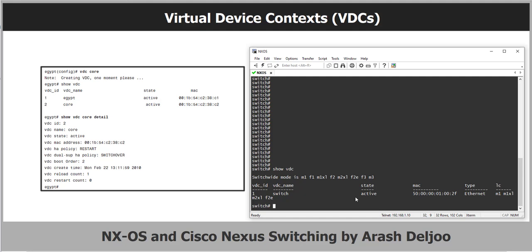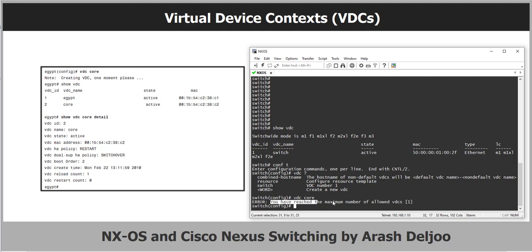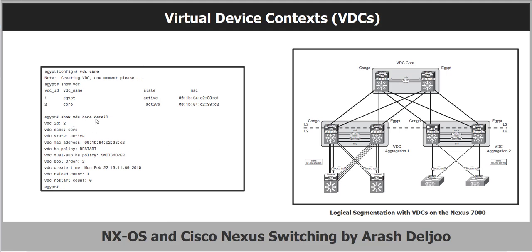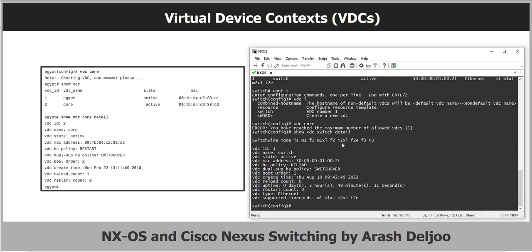If I try to create a new VDC — for example, 'vdc core' — I receive an error message because the emulator has reached the maximum number of allowed VDCs. On an actual Nexus 7000 switch, you have four VDC options: VDC one by default, plus VDC two, three, and four. You can also use 'show vdc' followed by the VDC name and 'detail' to see detailed information including VDC ID, VDC name, VDC state, VDC MAC address, and other features.